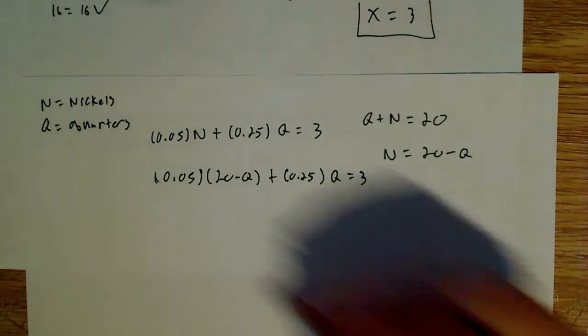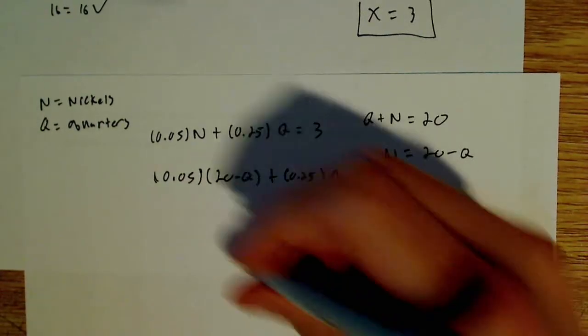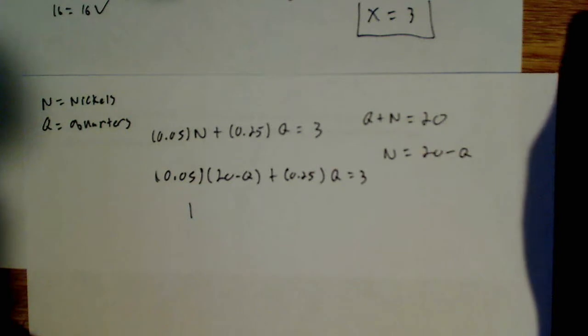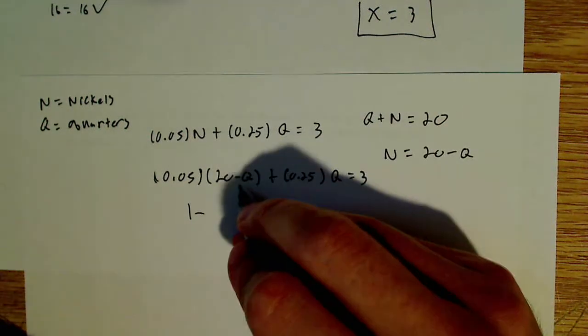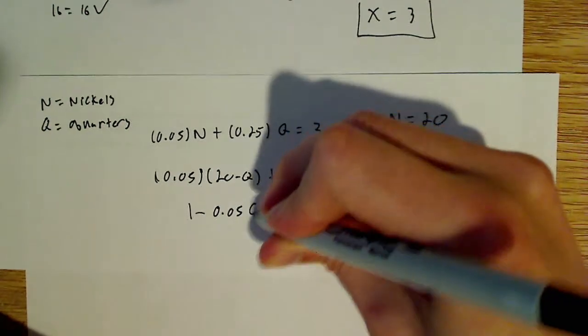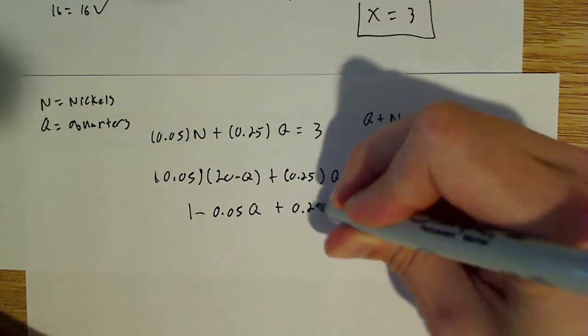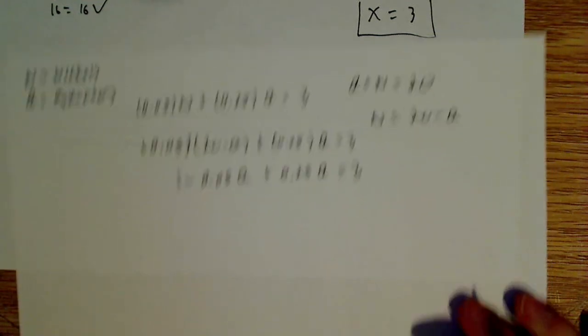And now that I have that, I can simply distribute this here and 0.05 times 20 is equal to one. So that makes it really simple and convenient and that means we're going to have minus. Now don't forget there's a minus sign again. So it's minus 0.05q and then that's plus 0.25q and that's all equal to three.